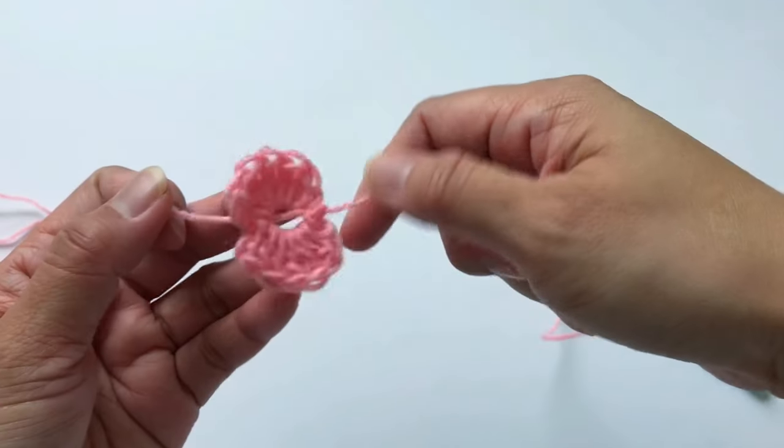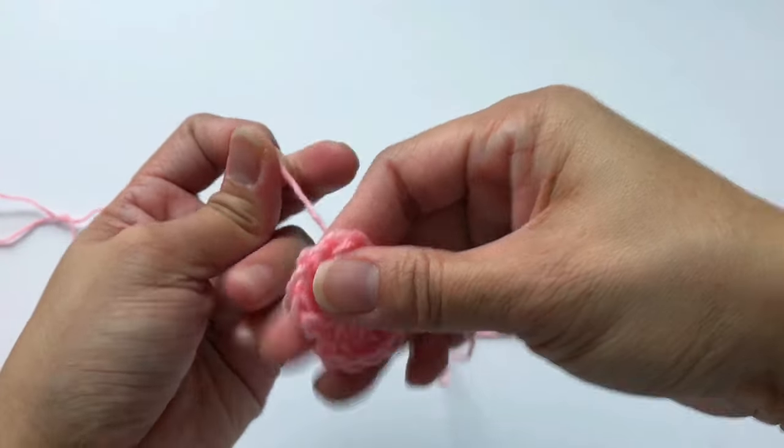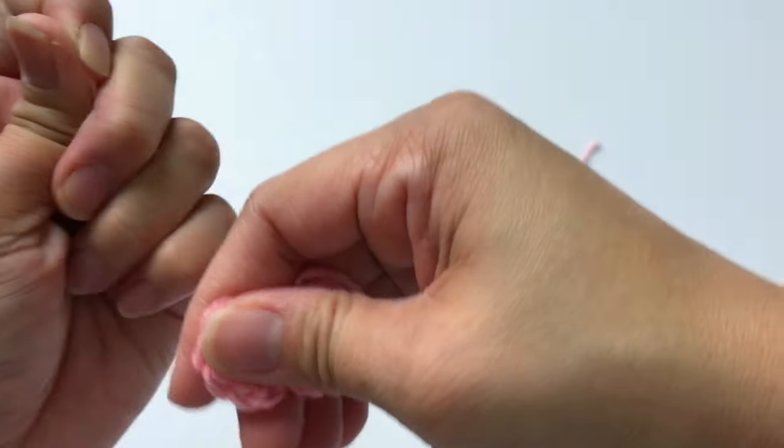Now to close the hole at the middle, just pull slightly the shorter yarn.